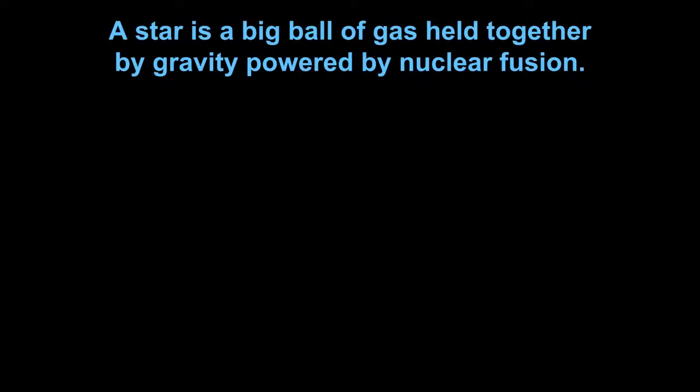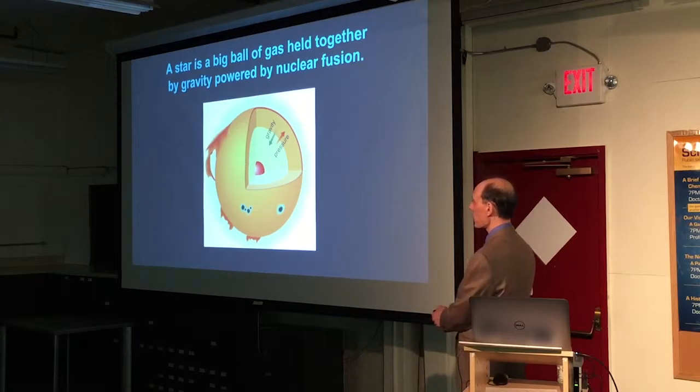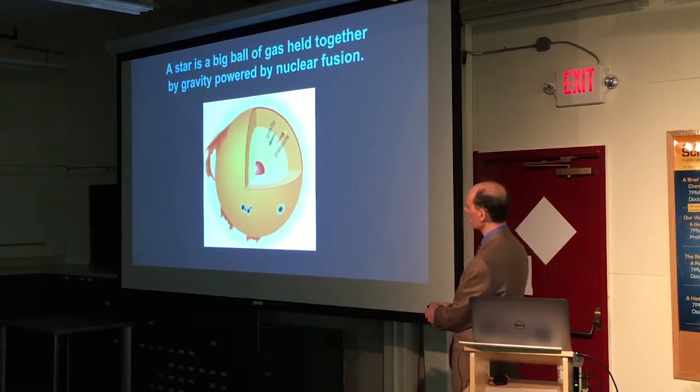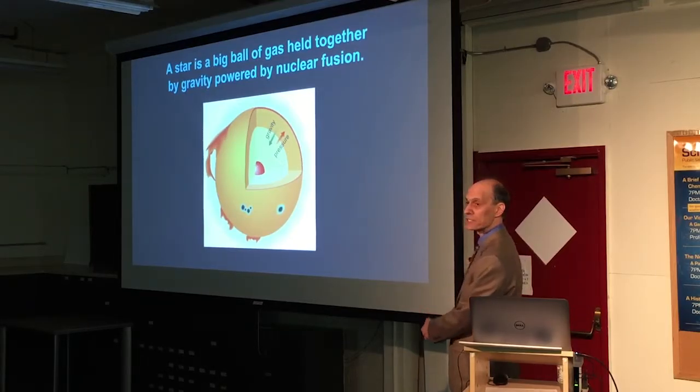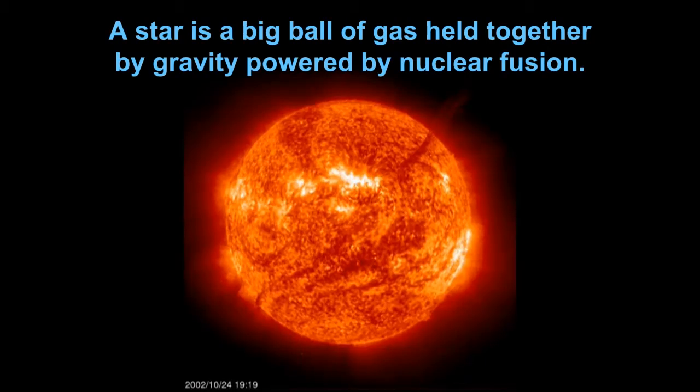So what is a star? It's a big ball of gas held together by gravity powered by nuclear fusion. So here's an artist's picture. We have here in the center of the star nuclear fusion is going on, is generating heat. That heat is causing an outward pressure force. The mass of the star has an inward gravitational force and it's the balance of those two forces which keeps the star, gives the star its structure.